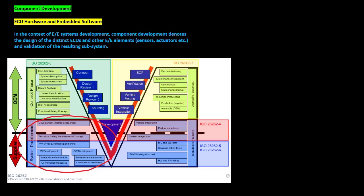In the context of EE systems development, component development denotes the design of the distinct ECUs and other EE elements — sensors, actuators, etc. — and validation of the resulting subsystem.